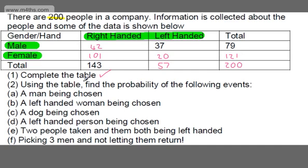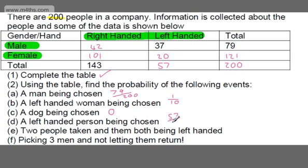Using the table, find the probability of the following events. A man being chosen: there are 79 males out of 200, so 79 over 200. A left-handed woman being chosen: there are 20 left-handed women, so 20 over 200, which simplifies to 1 over 10. A dog being chosen: we don't have that option, so the probability is 0. A left-handed person being chosen: there are 57 left-handed people out of 200, so 57 over 200.